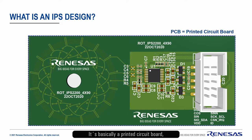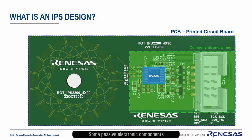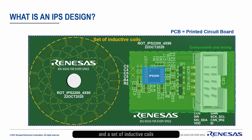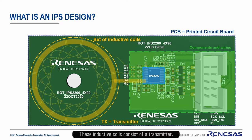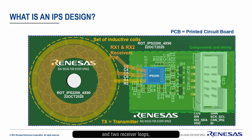It's basically a printed circuit board with an IPS chip, some passive electronic components and wiring, and a set of inductive coils realized as PCB wiring and vias. These inductive coils consist of a transmitter and two receiver loops, and they are connected to the IPS chip.